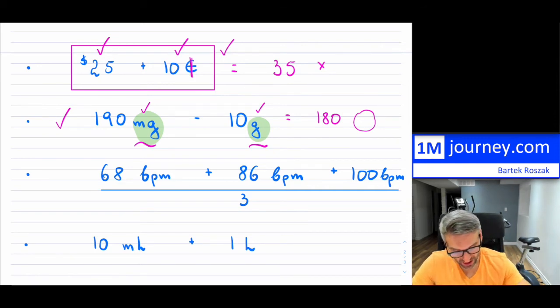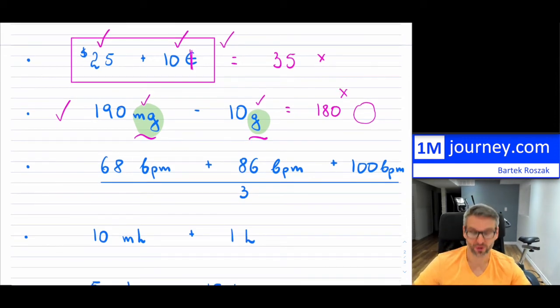Because this clearly cannot be 180. You're going to have to create and convert to some unit which is consistent. So you either change to milligrams or you're going to change everything to grams. That is consistency. That's what you need.